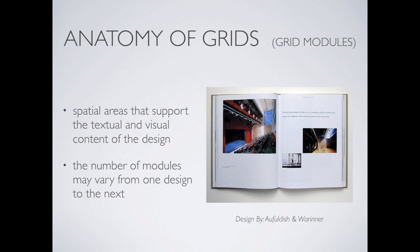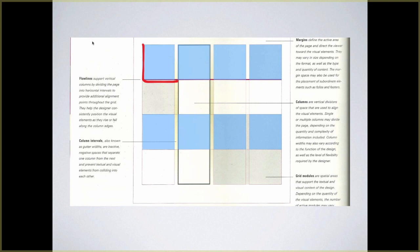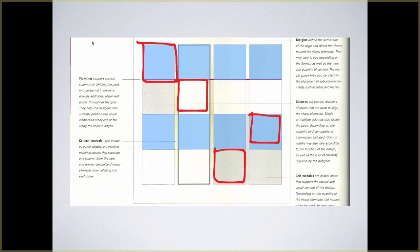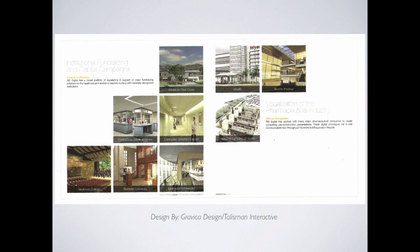Next is something called a grid module. We're taking spatial areas that support visual and textual information. The number of modules varies, but essentially we have columns, column intervals, and flow lines — and if you look at the squares that grid makes, that's a grid module. Every one of those little squares is a grid module, defined by the column, the flow line, and the column interval. Here in a layout piece, you can see the individual grid modules relatively easily — we have two flow lines and six columns, with text actually spanning two columns.